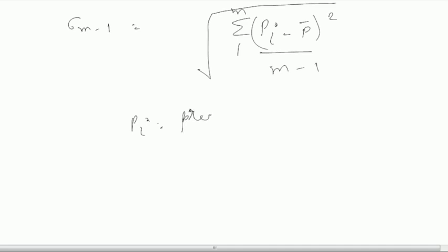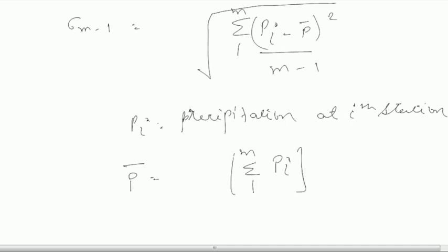Now how to calculate this standard deviation and mean precipitation? The formula for this is sigma M-1 will be given by summation 1 to M, Pi minus P bar whole square upon M-1, whole under root. Here Pi equals precipitation at ith station and P bar equals mean precipitation, and that is given by summation 1 to M, Pi whole upon M.